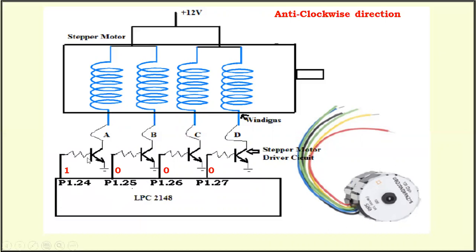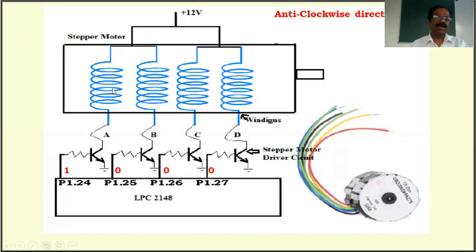Once it is high, the transistor is on — it appears like a closed switch. By that time current starts flowing through the winding. Because of the current, there will be a magnetic field and magnetic flux created around this coil. Because of the magnetic flux, it is going to create a torque — a twisting force — around the coil. Therefore it is going to rotate the motor by 1.8 degrees.